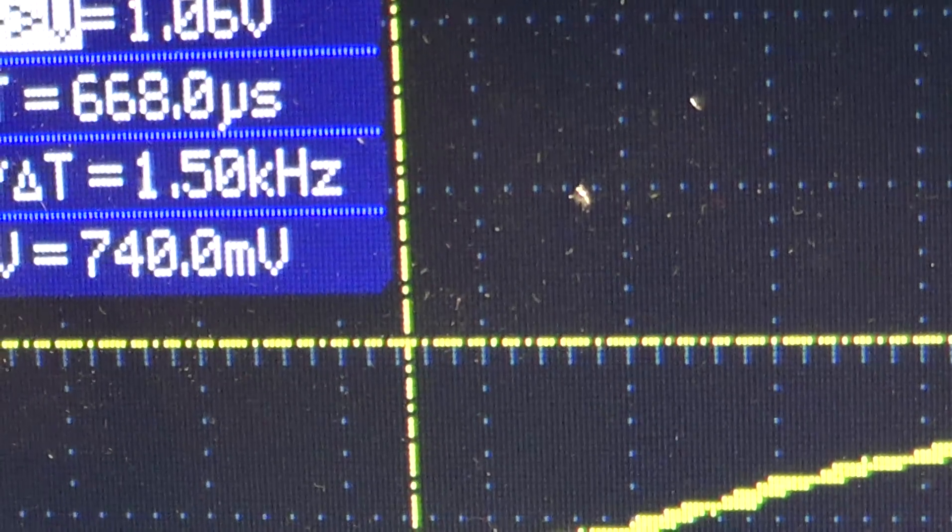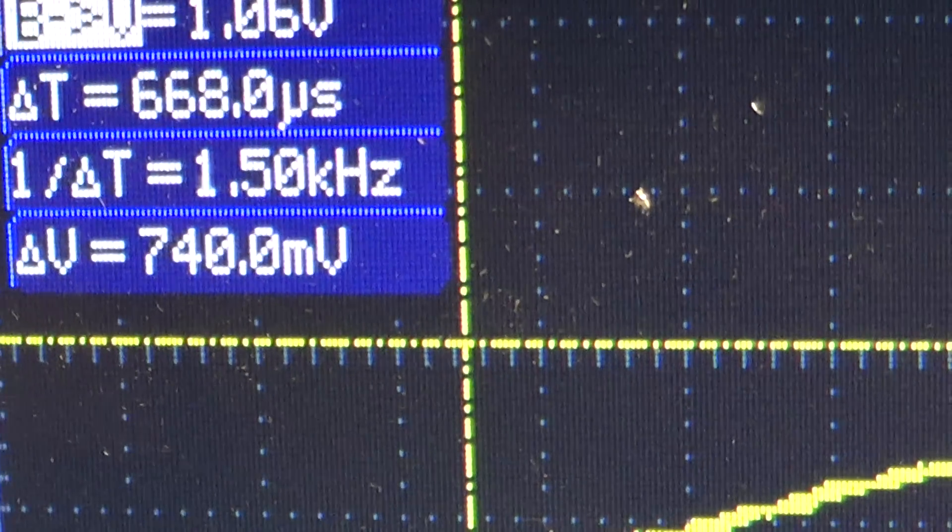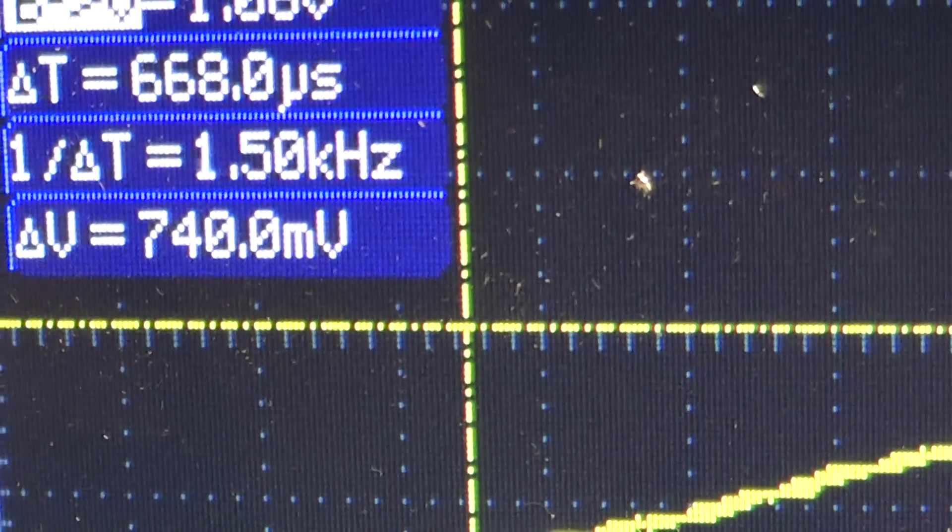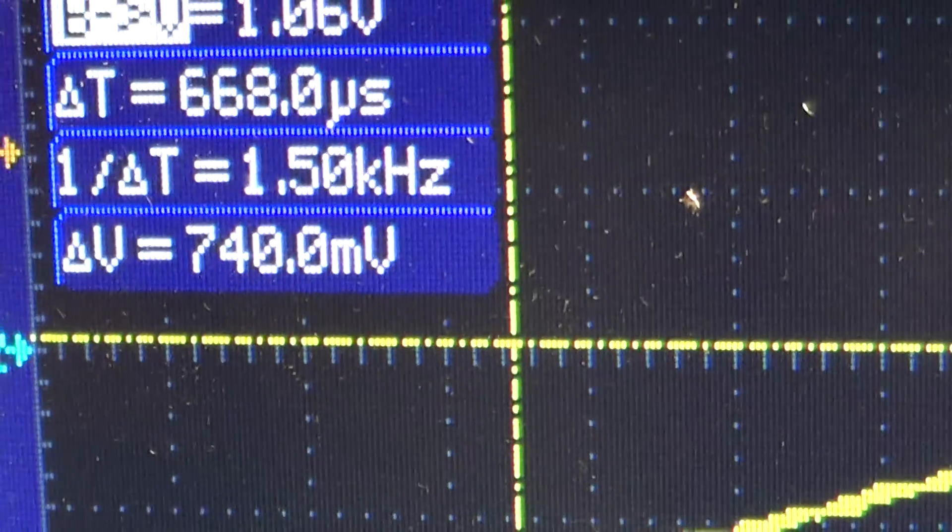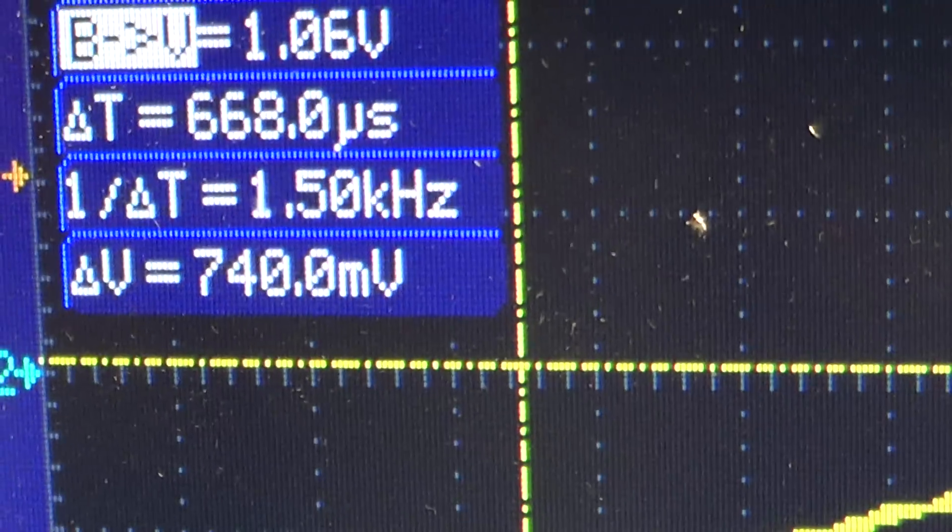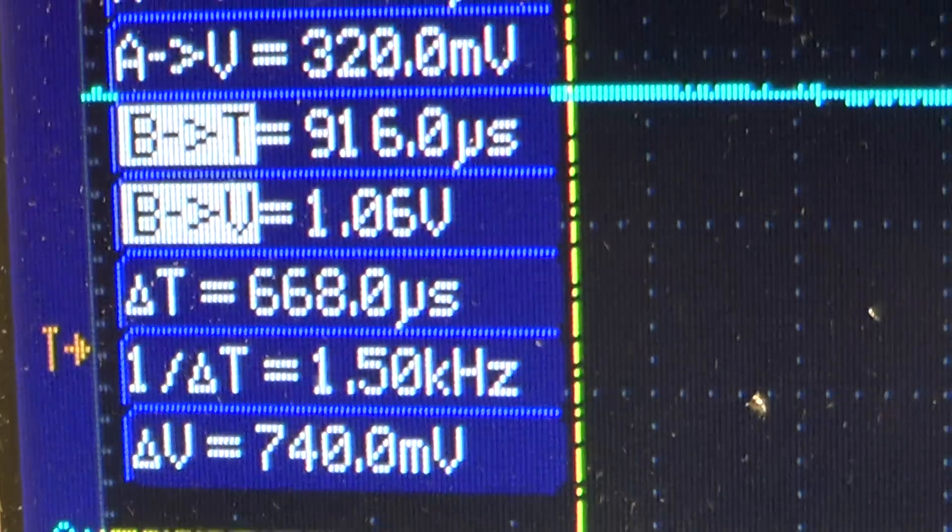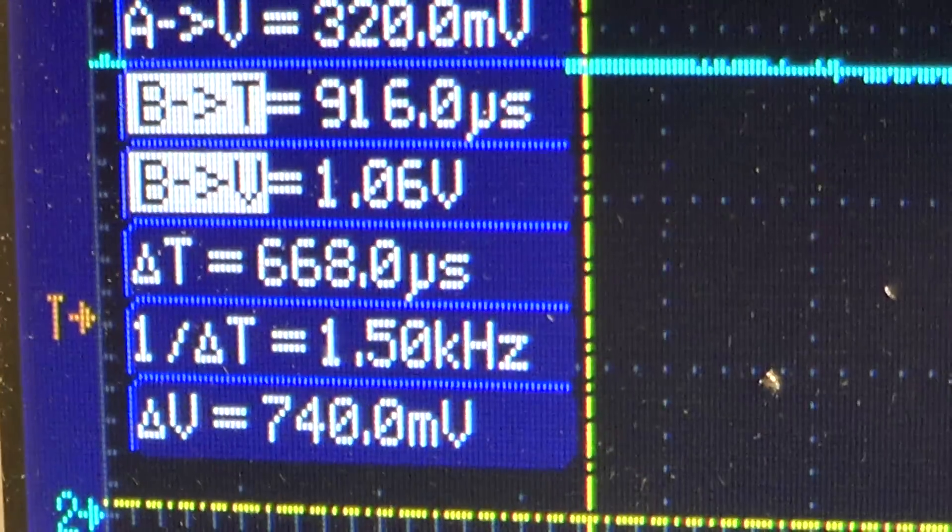So 740 millivolts divided by 12.5 milliohms is a current of 59 amps. It rises through that in Delta T, which is 668 microseconds.